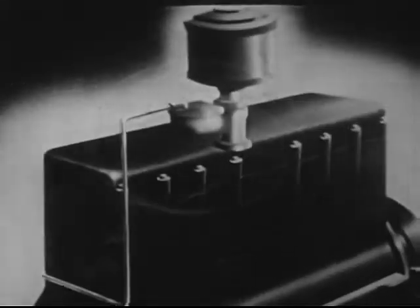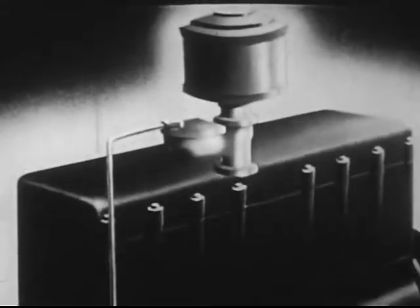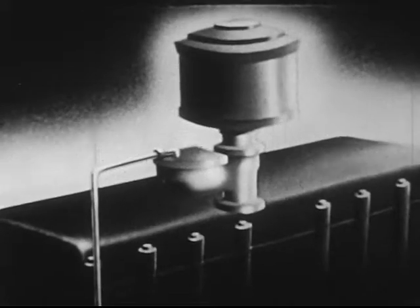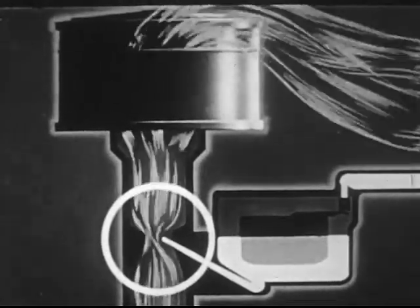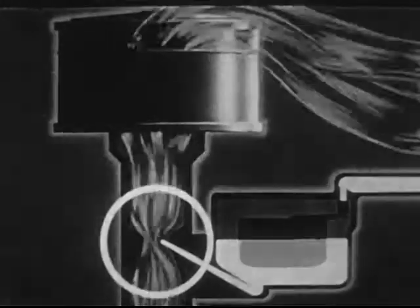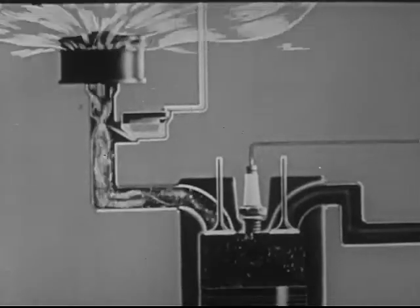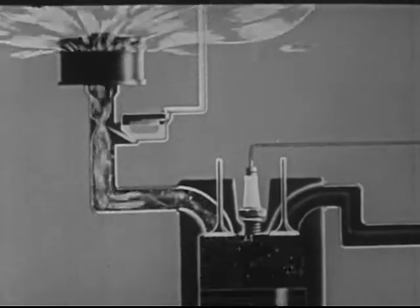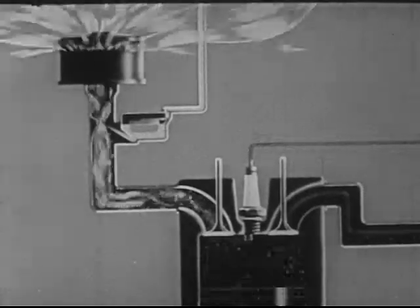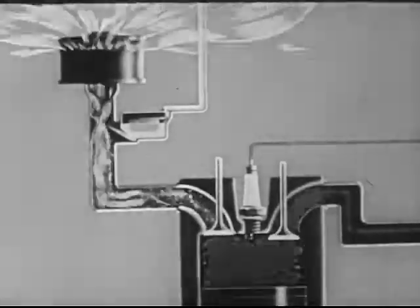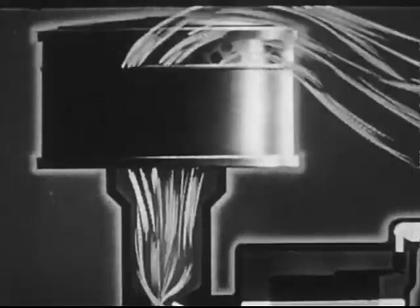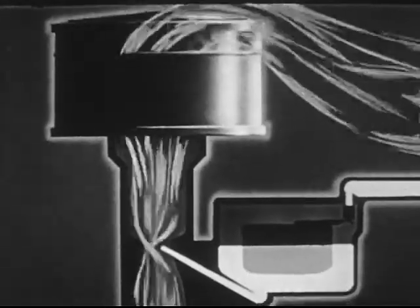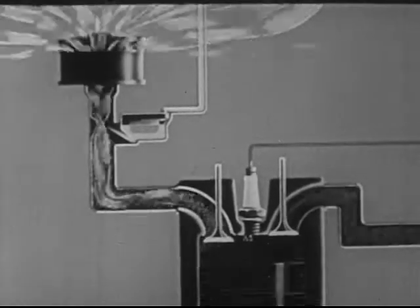In the carburetor, air must pass through this narrow tube on its way to the engine. This tight squeeze makes the air speed up, and it pulls drops of gasoline from this tank.